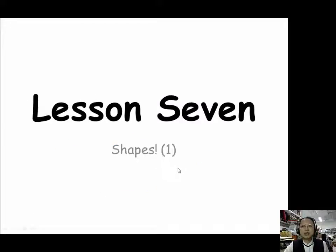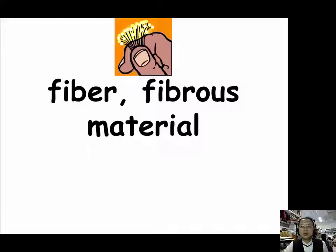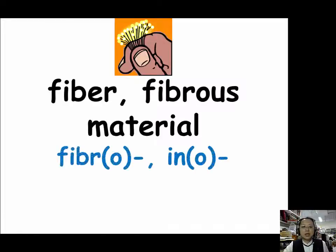Now let's continue to the last part of Lesson 7. We are going to learn more prefixes and suffixes regarding shapes. For describing fibrous things, or things that look like a fiber, we use the prefixes FIBRO (F-I-B-R-O) and INO (I-N-O). Let's see our examples.